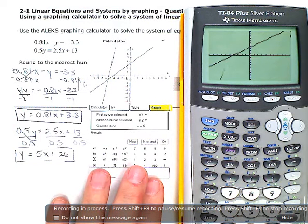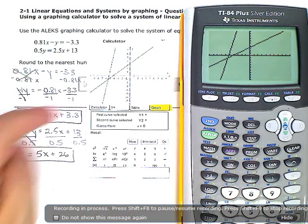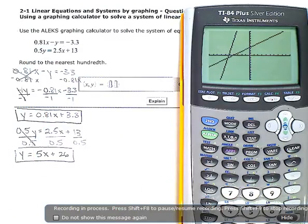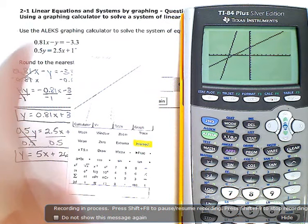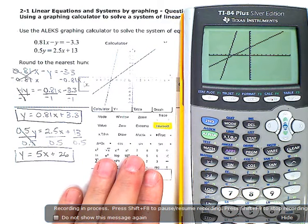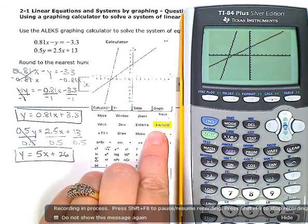And both calculators will show you the graph of the two lines. Next, we want to have the calculator actually calculate the point of intersection for us. So if you're on the ALEKS calculator, you're going to hit this button, the one that says intersect.